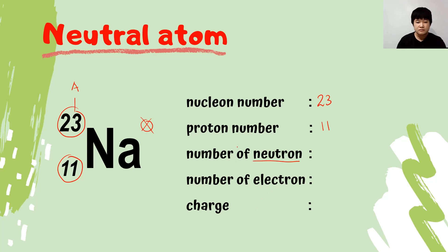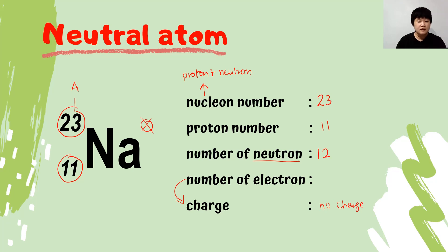The number of neutrons can be calculated from the nucleon number and proton number. We know that the nucleon number equals the number of protons plus the number of neutrons. So the neutron number is 23 minus 11, which equals 12. The number of electrons depends on the charge. Since the charge is zero, the number of electrons equals the proton number, which is 11.